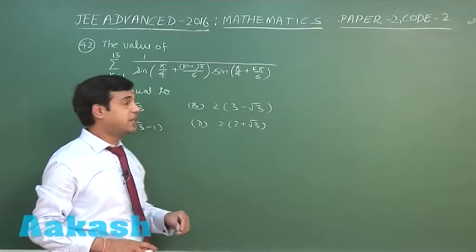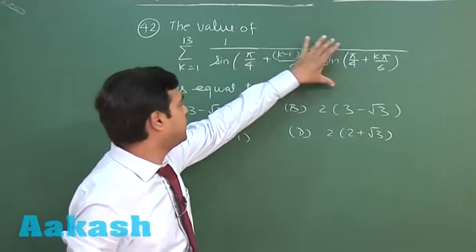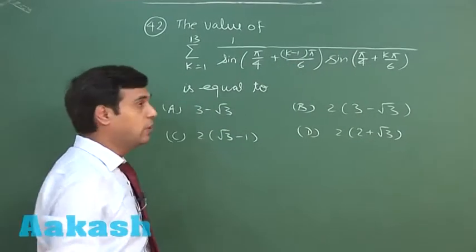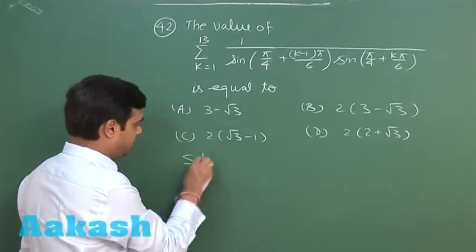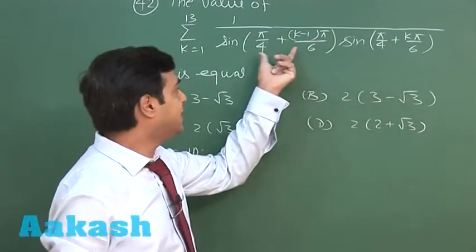Let us take question number 42. The value of summation k equals 1 to 13 of some expression is given, is equal to. Let us simplify this expression. Clearly we have two sine in denominator and we can see the difference.